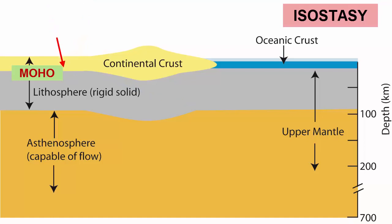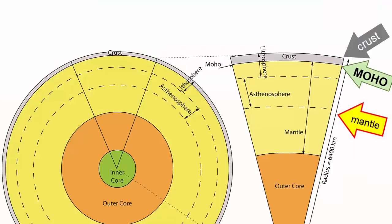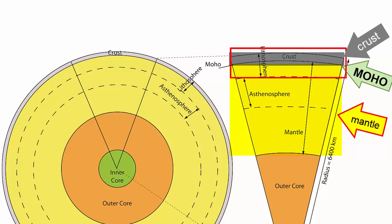Moho is a shorter, easier-to-remember label. Since the moho marks the boundary between the crust and the mantle, what layer does it sit within? The moho sits in the middle of the lithosphere, because the lithosphere contains all of the crust plus the uppermost mantle.